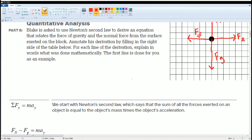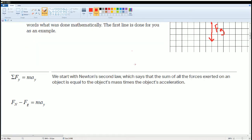It's Part B. For each line of the derivation, explain in words what was mathematically done. The first line is done for us as an example. Here we start with Newton's second law, which states that the sum of all the forces exerted on an object is equal to the object's mass times the acceleration in that direction.